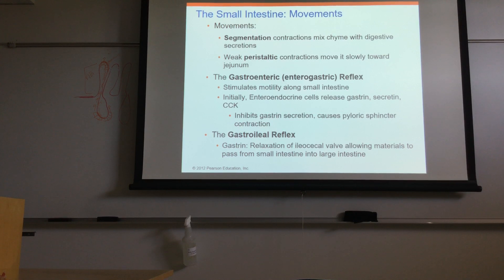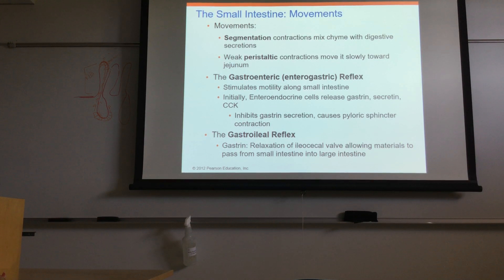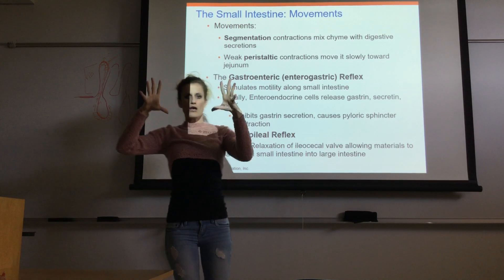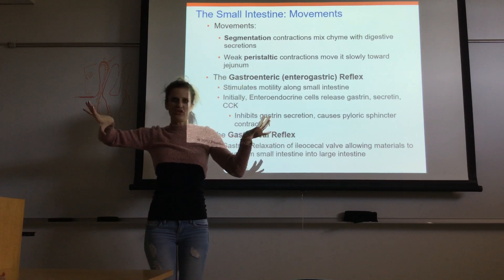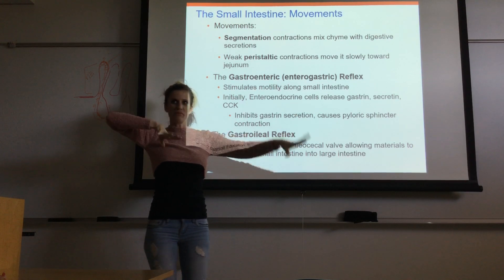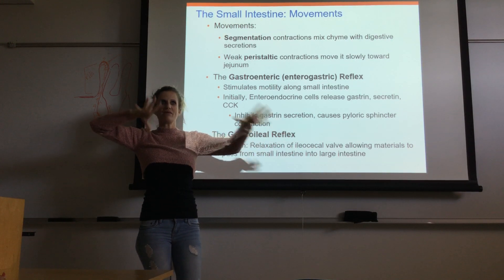Eventually, this process becomes cyclical. After the initial phase, gastrin secretion gets inhibited. Since gastrin stimulates motility and relaxation of the valves, inhibiting it causes the valves to contract. Then gastrin is released again, the valves relax, things move forward, and then gastrin is inhibited again and the valves contract. This cycle repeats continuously.